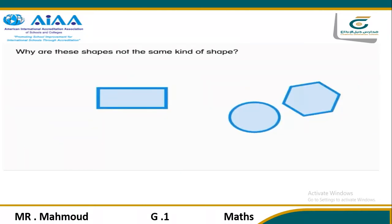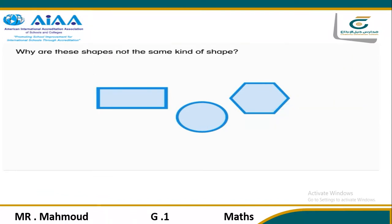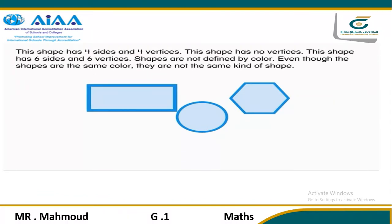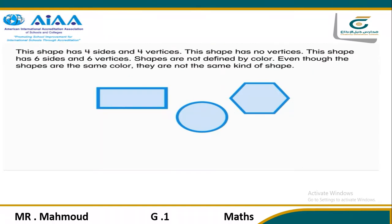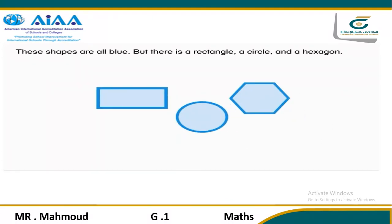Why are these shapes not the same kind of shape? This shape has four sides and four vertices. This shape has no vertices. This shape has six sides and six vertices. Shapes are not defined by color. Even though the shapes are the same color, they are not the same kind of shape. These shapes are all blue, but there is a rectangle, a circle, and a hexagon.